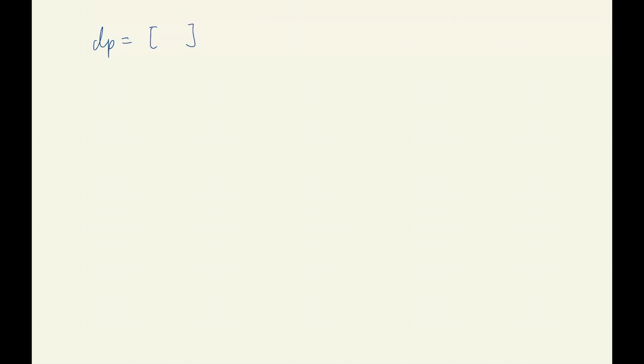We'll need an extra array to store our dynamic programming values — let's call it dp. We initialize it to a length of the given string s plus one, filled with false boolean values. This means at each location in the string, we don't yet know whether from index 0 to that location the substring can be segmented into dictionary words. Then we set our base case: dp[0] is initialized to true, because the empty string is always considered valid.